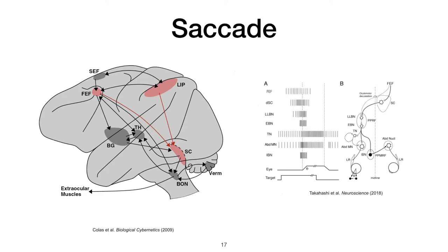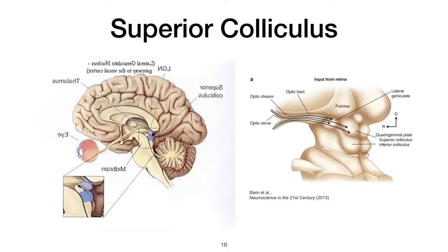Now let's talk about the physiology and neural circuits of eye movement. There are multiple cortical areas, ganglia, and nuclei with different roles in saccadic eye movements. The most important cortical area is the frontal eye field (FEF), and in the midbrain it is the superior colliculus (SC). Both have neurons that, when stimulated with an electrode, cause the animal to make a saccade — so they have the main role in saccadic eye movements.